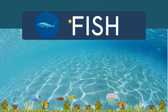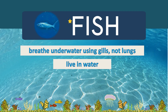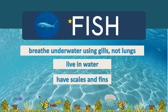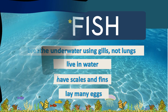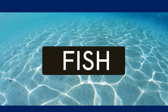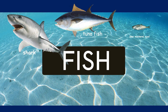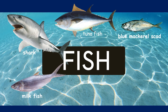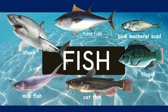Let us read the characteristics of fish: they breathe underwater using gills, they live in water, they have scales and fins, and they lay many eggs. Examples of fish are shark, tuna, blue mackerel, milkfish, tilapia, and catfish.